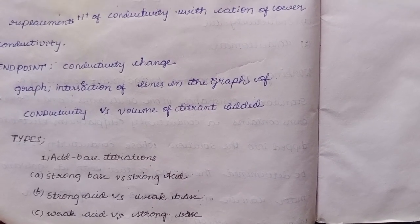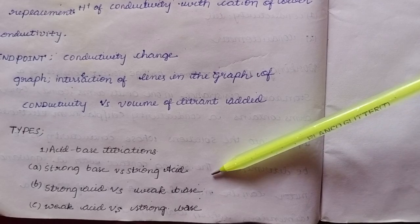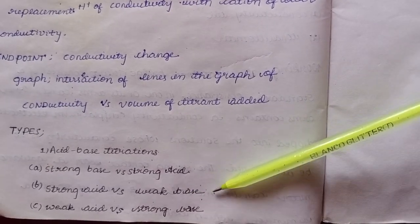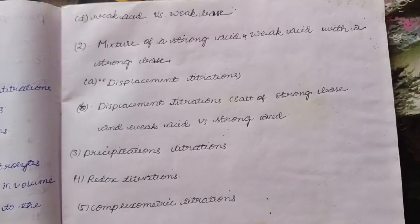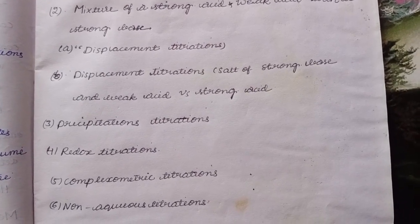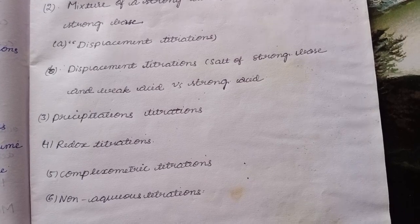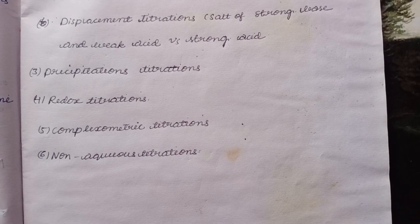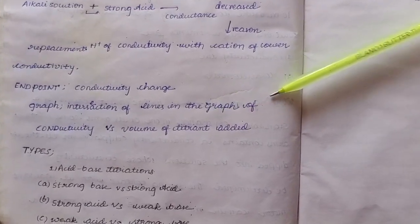There are six types of conductometric titrations. First: acid-base titrations — strong acid versus strong base, strong acid versus weak base, weak acid versus strong base, and weak acid versus weak base. Second: mixture of strong acid and weak acid with a strong base. Third: displacement titration — salt of strong base and weak acid versus strong acid. Fourth: precipitation titrations. Fifth: redox titrations. Sixth: complexometric titrations and non-aqueous titrations.